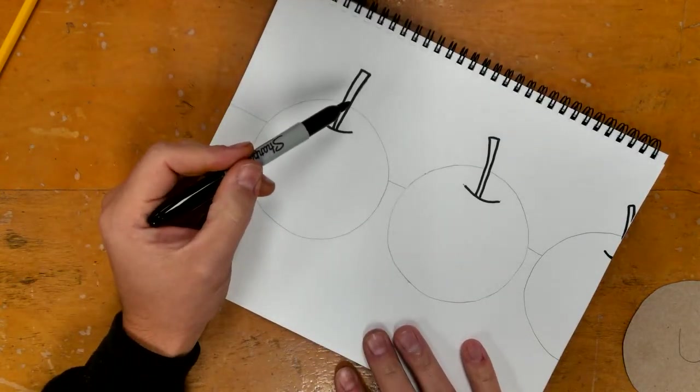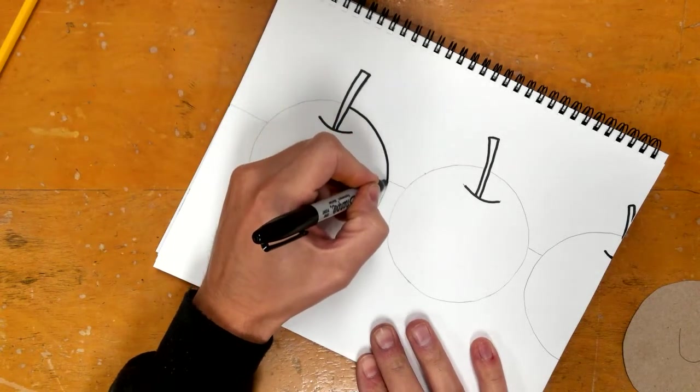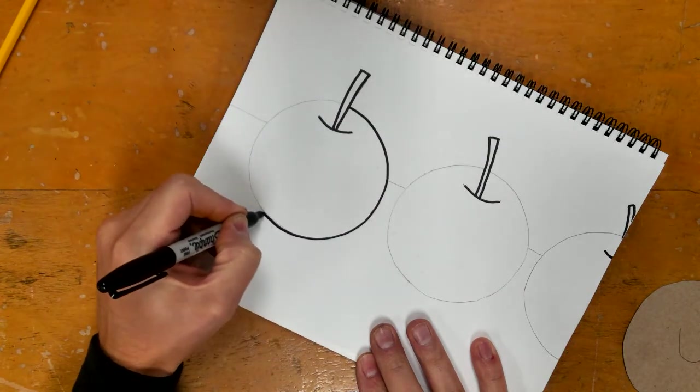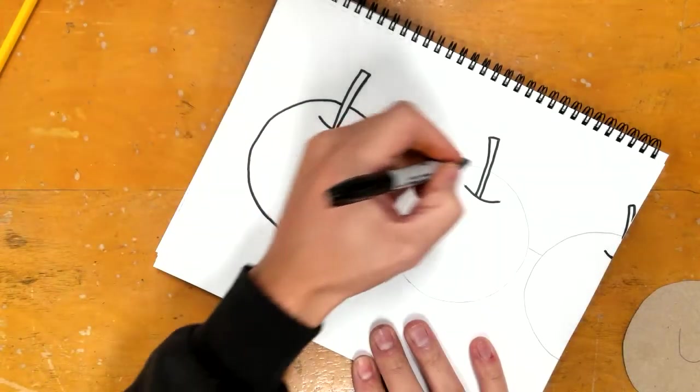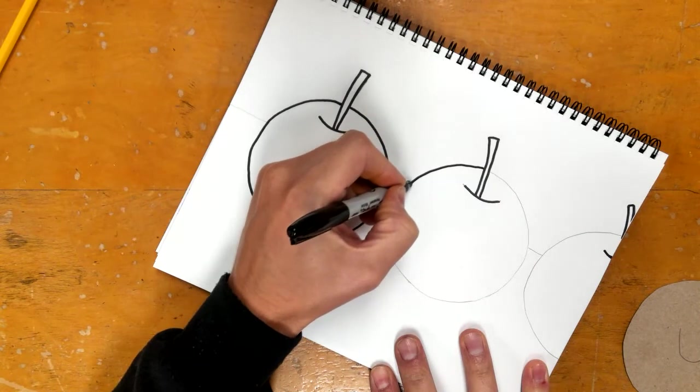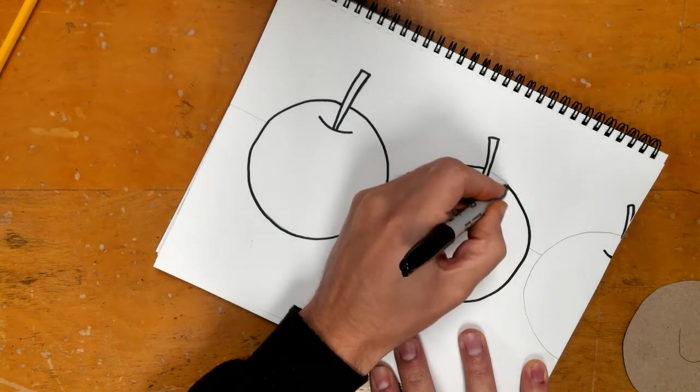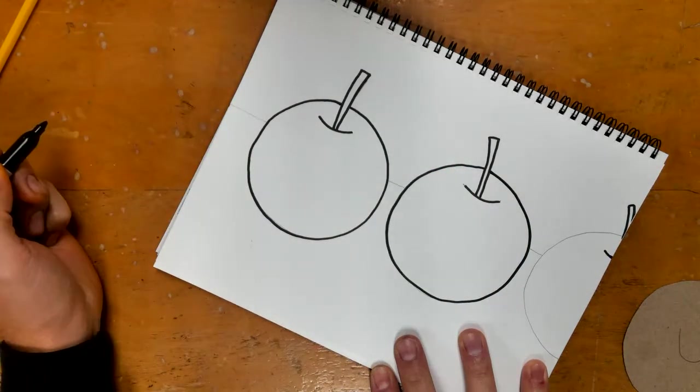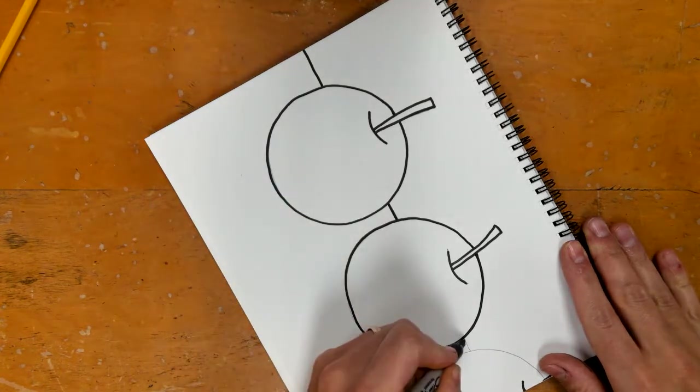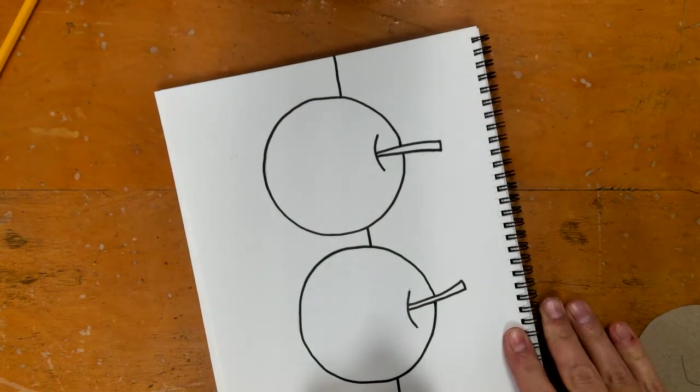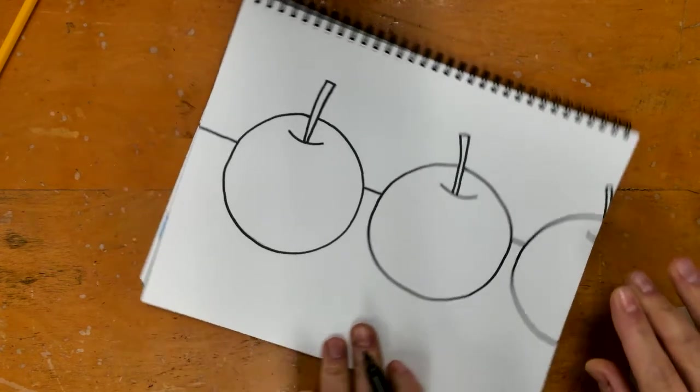The reason that I did the stems first was because now I can start on the edge of the stem and slowly go around. I would stop once I get to the stem. So I'll do that one more time. I'm also going to do my horizon line and my third apple.